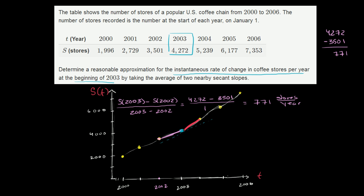Now let's do the same thing for this red secant line between 2003 and 2004. The slope of that secant line is going to be the number of stores in 2004 minus the number of stores in 2003 over 2004 minus 2003, which is equal to, they had 5,239 stores in 2004. They have 4,272 stores in 2003. And then only one year changes. So 2004 minus 2003 is 1. So this is equal to, I'll do the subtraction problem up here, so 5,239 minus 4,272.